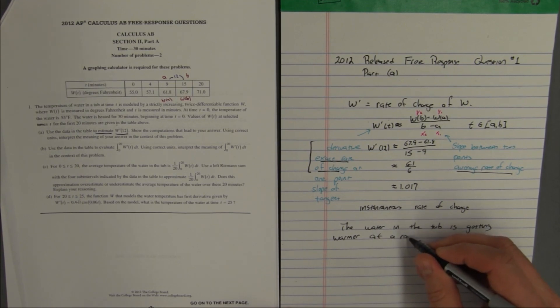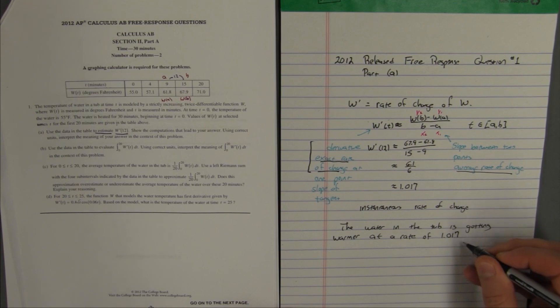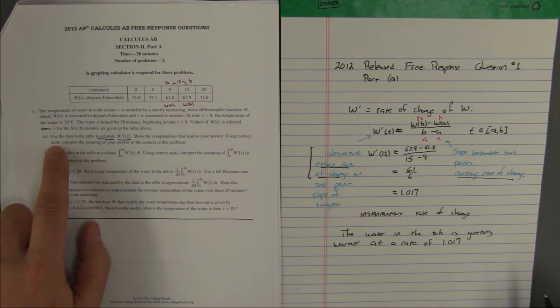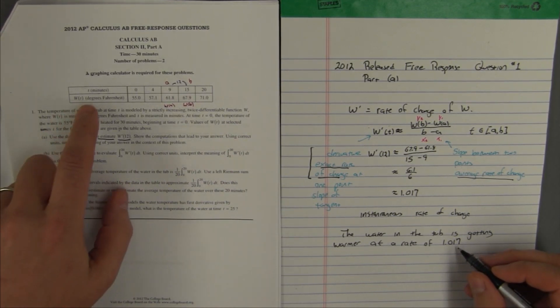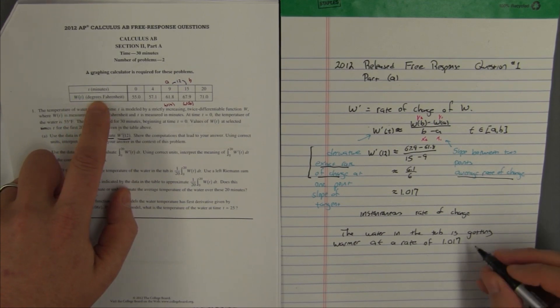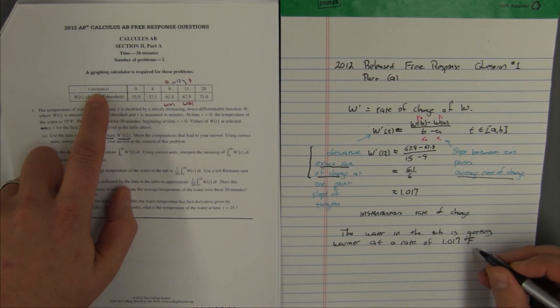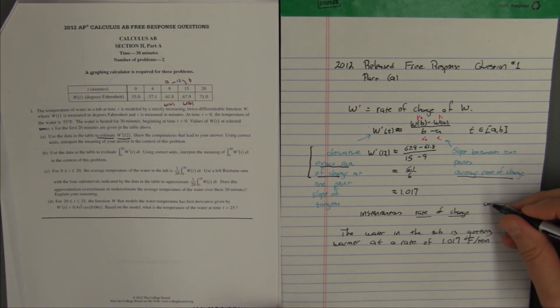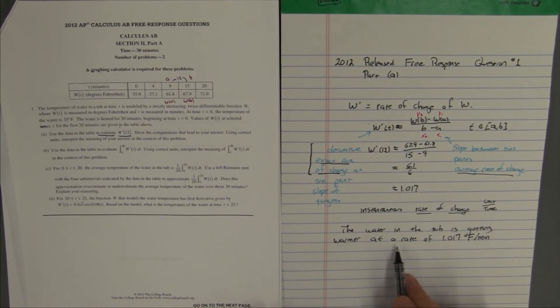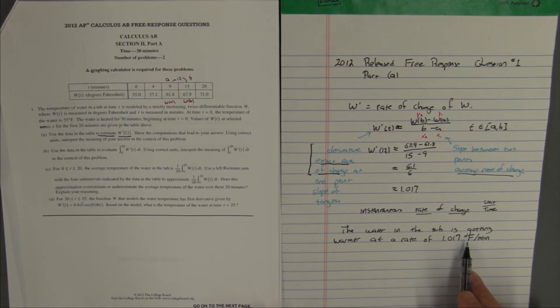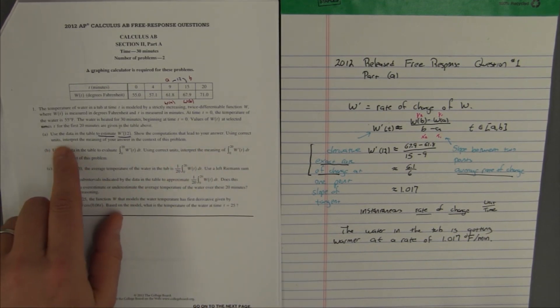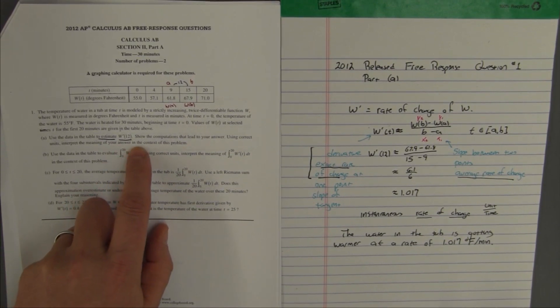At a rate of, see now I can be more specific, at a rate of 1.017, now here's the part where I'm going to use correct units, here it is, using correct units, and say that this 1.017, what are our units? The W is in degrees Fahrenheit, so I'll just abbreviate that, degrees Fahrenheit, but the time is in minutes, so it's per minute. Remember this is a rate of change, and a rate of change is always going to be some kind of a unit over some kind of a time unit, because it's a rate of change. So I'm going to say that the water in the tub is getting warmer at a rate of 1.017 degrees Fahrenheit per minute, period. Now I have used correct units to interpret the meaning of my answer in the context of this problem.